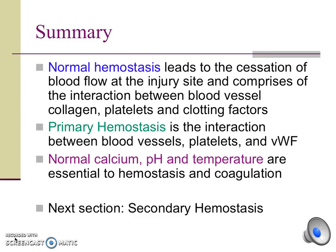This concludes part one of this series. We have described that normal hemostasis leads to the cessation of blood flow at the site of injury and comprises the interaction between blood vessel collagen, platelets, and clotting factors. Primary hemostasis is the interaction between the blood vessel collagen layer, platelets, and von Willebrand factor to build the solid foundation on top of which secondary hemostasis may occur. Normal calcium, pH, and temperature in the blood are essential to overall hemostasis and coagulation. In part two, in a separate recording, we will go through secondary hemostasis. Thank you for your attention.